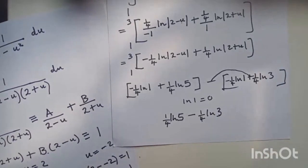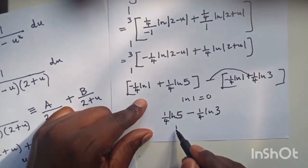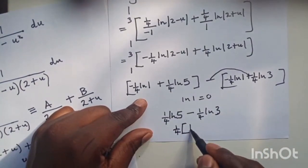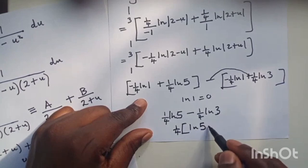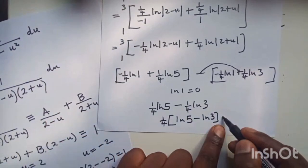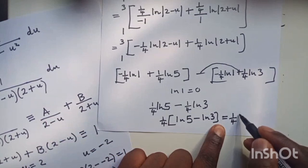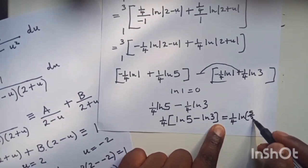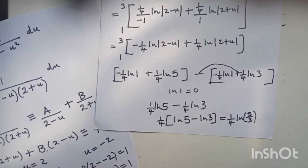The final answer can be written as one quarter times (ln 5 minus ln 3), or factoring out one quarter and applying the quotient law of logarithms — subtracting logarithms means dividing the arguments — this simplifies to one quarter ln(5/3). I hope you enjoyed today's lesson. Watch out for the next episode of integration by substitution. My name is Innocent Mapanda, have a nice day.